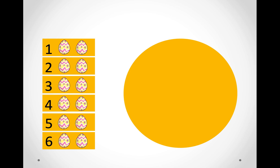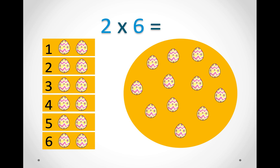In this picture we have six groups and in each group there are two eggs. So we can say two times six. We can count them, or we can count in twos: two, four, six, eight, ten, twelve. So two times six equals twelve.